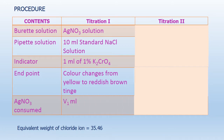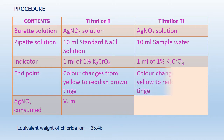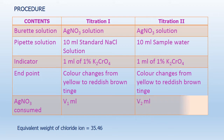AgNO₃ consumed in Titration 1, let it be V1 ml. For Titration 2, the burette solution is silver nitrate solution, and the pipette solution is 10 ml of sample water. The indicator is 1 ml of 1% potassium chromate solution, and the endpoint is color change from yellow to reddish brown tinge. AgNO₃ consumed in Titration 2, let it be V2 ml. The equivalent weight of chloride ion is 35.46.